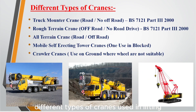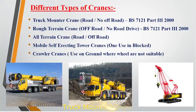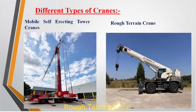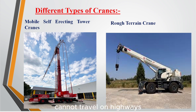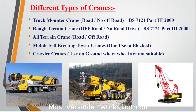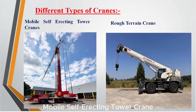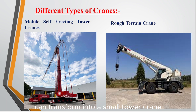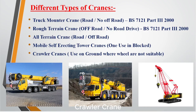Now let's look at the different types of cranes used in lifting operations. Truck mounted crane: travels on roads, not suitable for rough terrain. Rough terrain crane: for off-road work only, cannot travel on highways. All terrain crane: most versatile, works both on roads and off-road. Mobile self-erecting tower crane: used in congested areas, can transform into a small tower crane. Crawler crane: runs on crawler tracks, perfect for soft ground and heavy lifting, but slow moving.